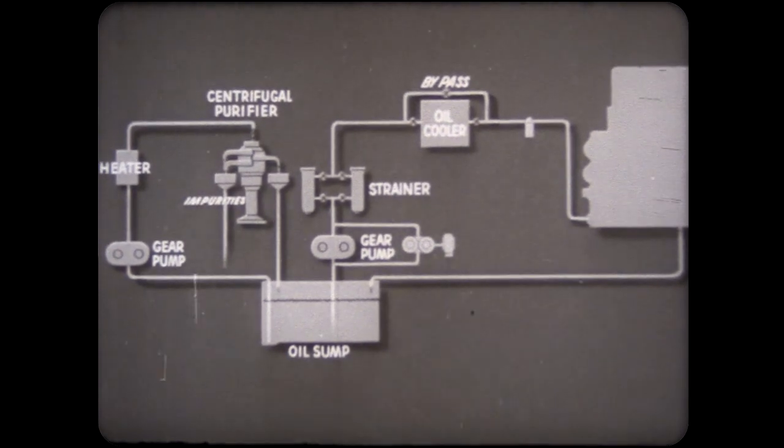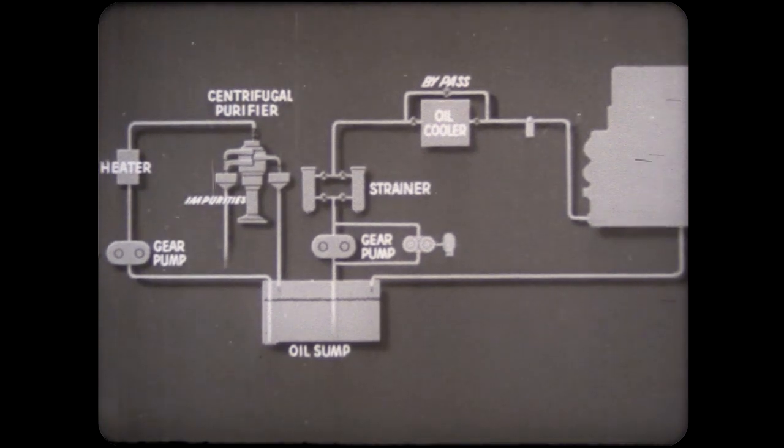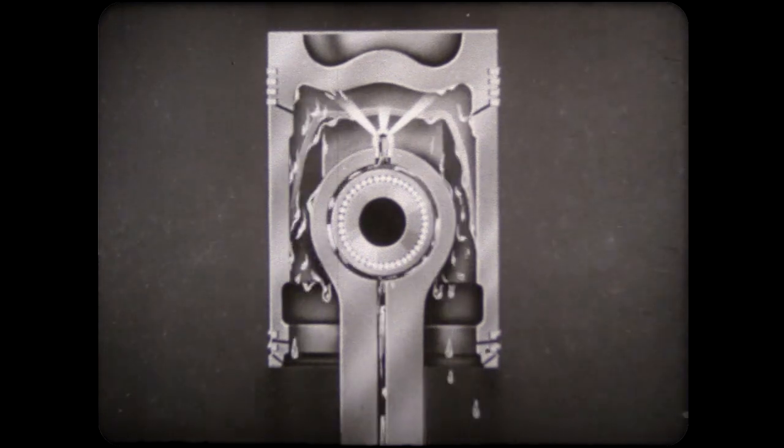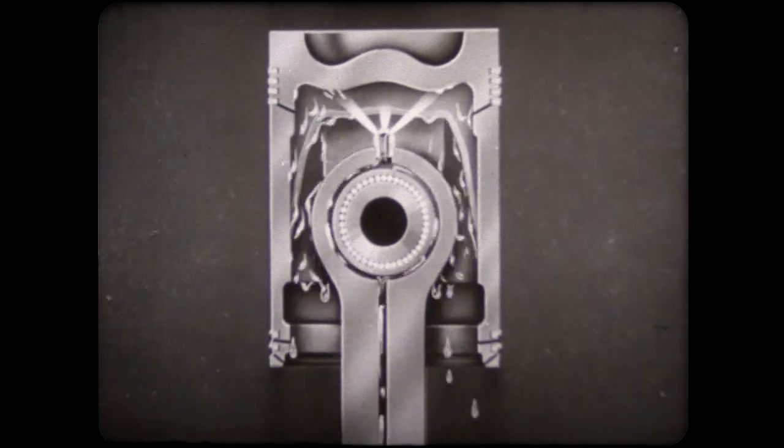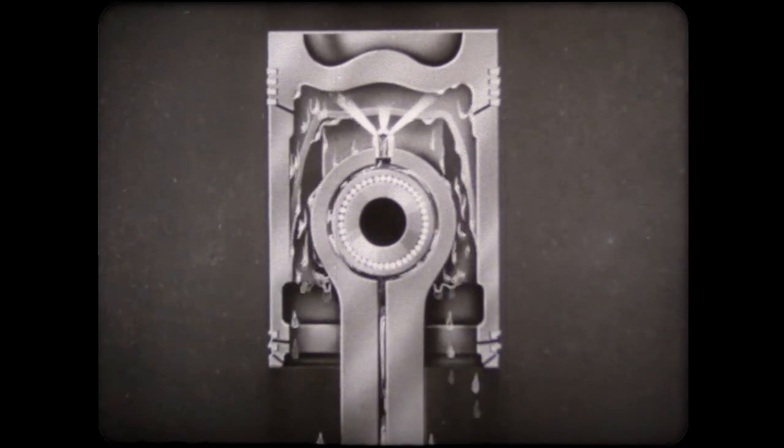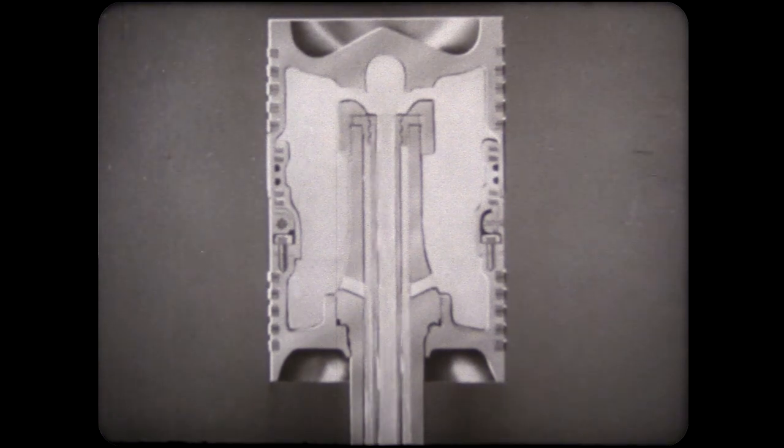In several engines, however, the lubricating oil is used for piston cooling as well. In the large general motor submarine engine, the oil is sprayed from a nozzle at the end of the connecting rod onto the underside of the piston. In the HOR double-acting engine, the oil is circulated through the piston, entering and leaving through tubes in the piston rod.